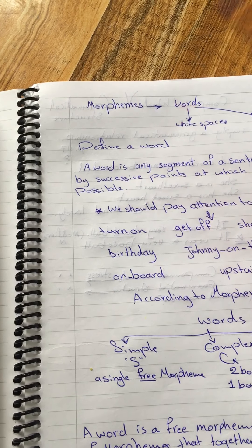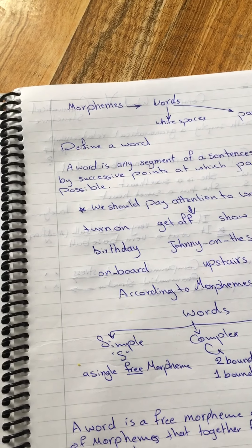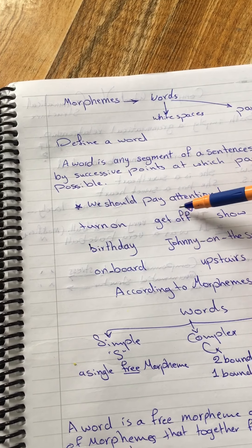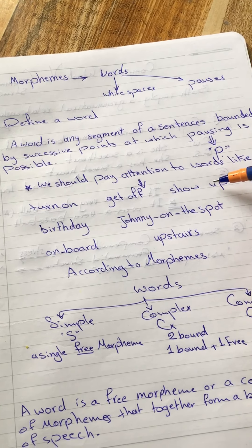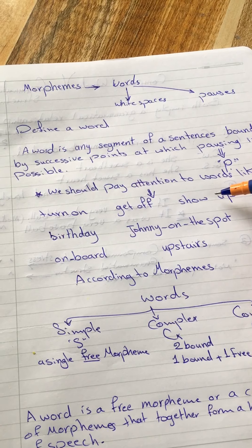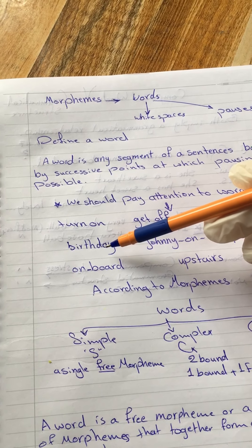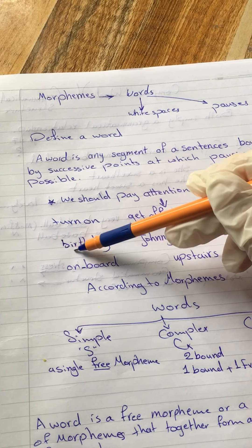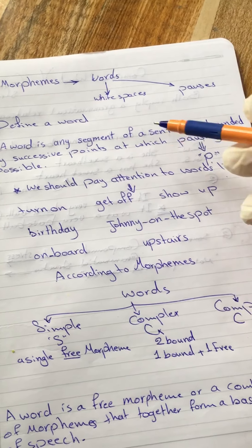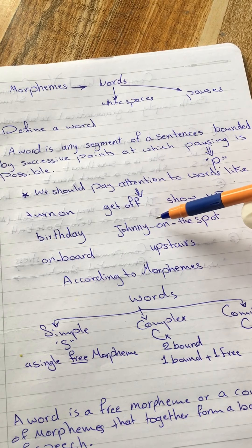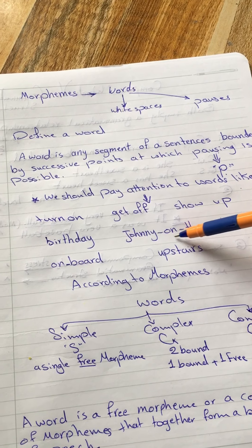In writing: 'turn on' has a space, 'get off' has a space, 'show up' has a space, 'birthday' has no space. Both words together form one word. They can also be hyphenated words.